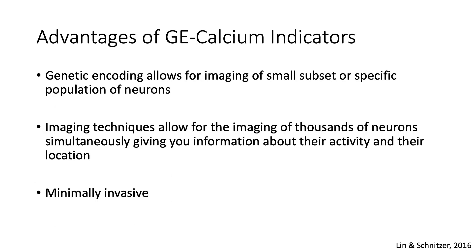Now, let's talk about some advantages of genetically encoded calcium indicators. First, genetic encoding allows for imaging of a small subset or specific populations of neurons — in vivo electrophysiology cannot achieve this degree of cell type specificity. Next, imaging techniques allow for the imaging of thousands of neurons simultaneously, giving you information about their activity and their location, which allows for the analysis of spatiotemporal patterns. Lastly, these techniques tend to be minimally invasive. Unlike the implantation of electrodes, imaging can usually be accomplished through a thinned skull or a cranial window.